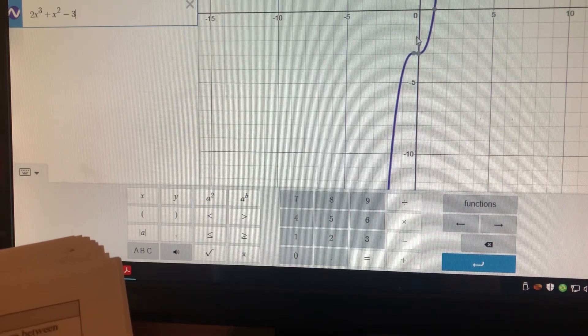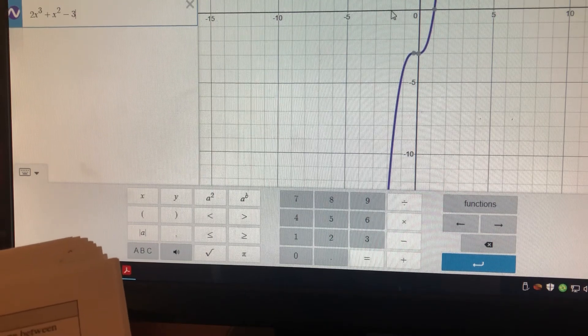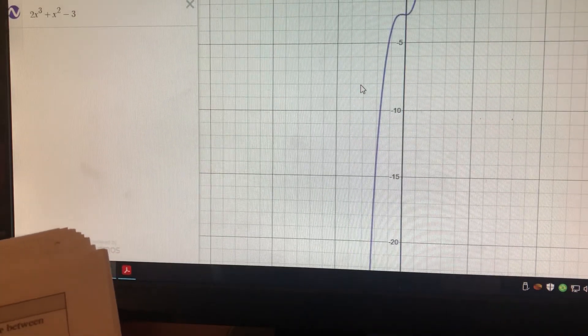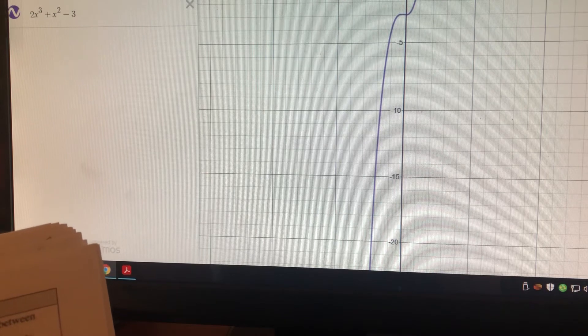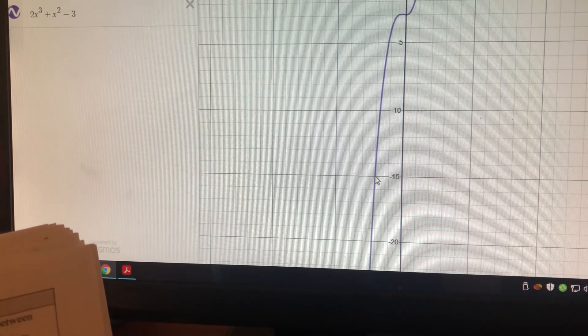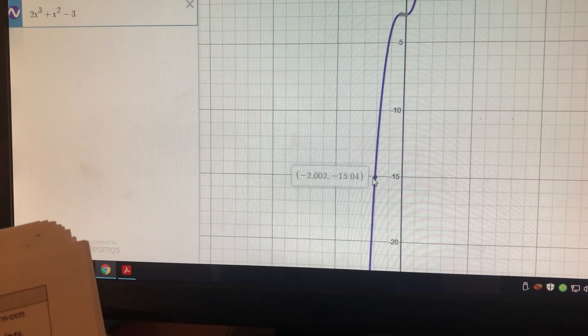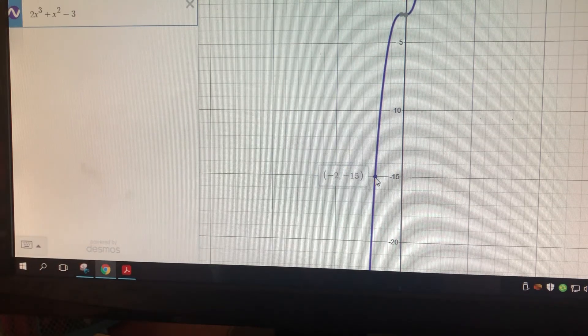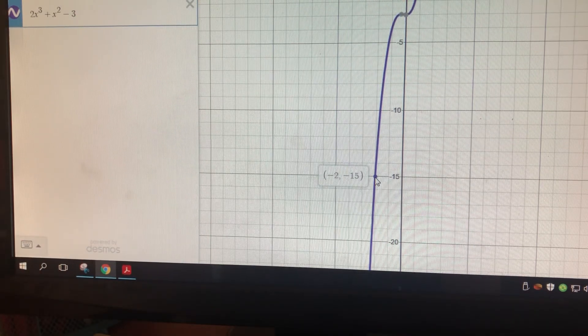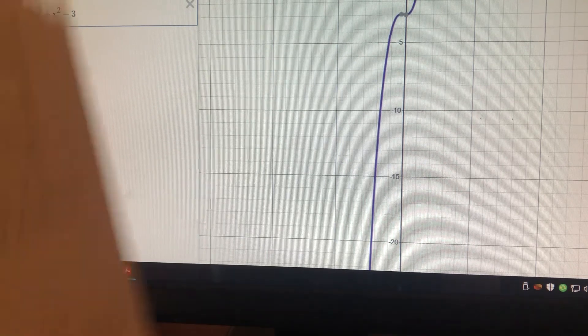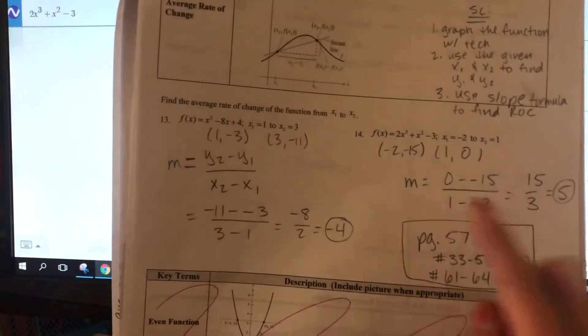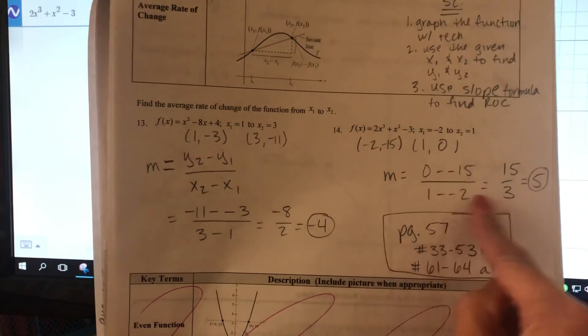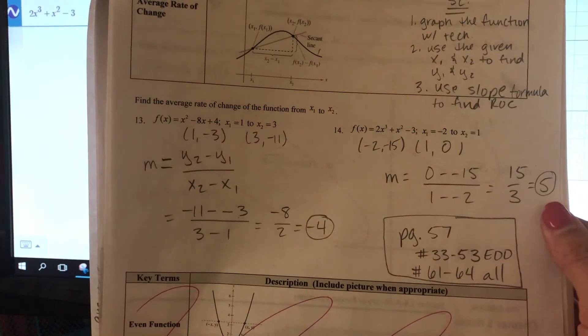And then, so it says x is negative 2. So here's negative 2. Follow it down. So I see that x is negative 2, y is negative 15, that would be my first point there. And then it says x is 1. So 1, 0 there. So those are my two points that I have. So negative 2, negative 15, and then at 1 it was 1, 0. Plug it into slope formula and you find your average rate of change there.